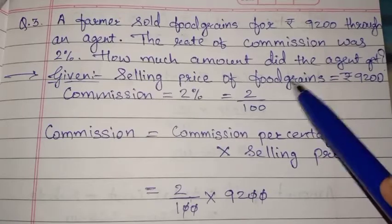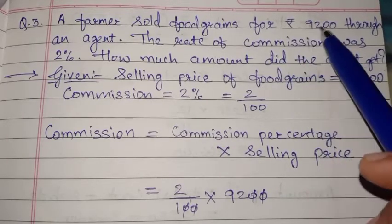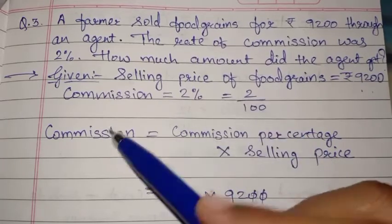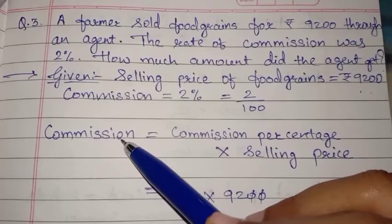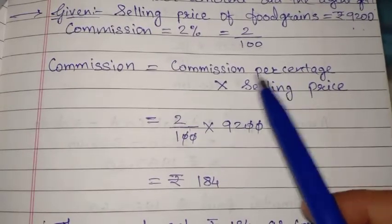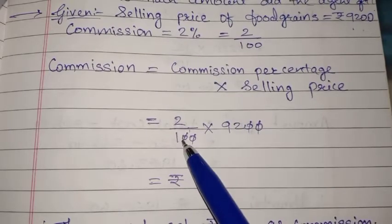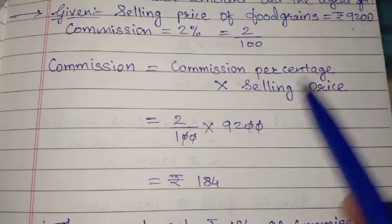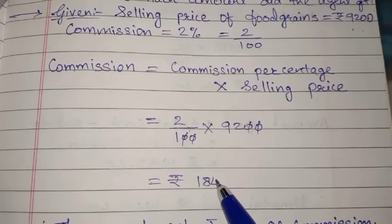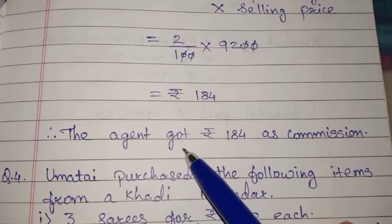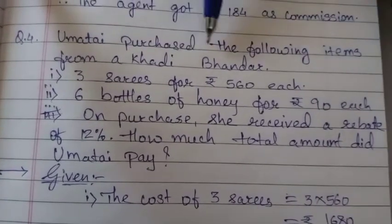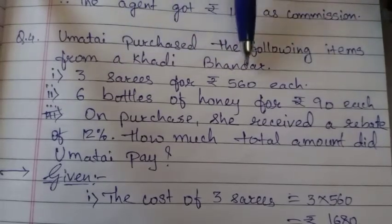Question number three: A farmer sold food grains for rupees 9,200 through an agent. The rate of commission was 2%. How much amount did the agent get? Selling price = rupees 9,200; commission = 2% = 2 upon 100. Commission = 2/100 × 9200; zeros cancel, giving 92 × 2 = rupees 184. Therefore the agent got rupees 184 as commission.